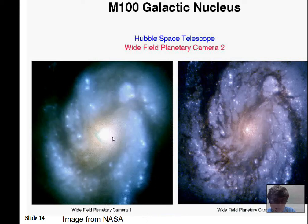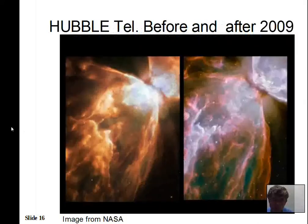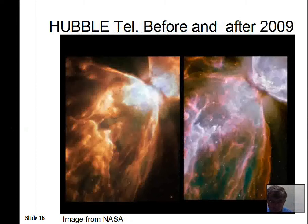Consequently, the Hubble Telescope had to be repaired. Since it's in a low Earth orbit reachable by astronauts, there have been five servicing missions to upgrade equipment and install corrective optics — essentially glasses to fix its vision. These have been extremely successful. The last mission in 2009 greatly improved optics quality and electronic detectors. There are no future plans to update Hubble, but it should provide good images for a few more years, hopefully until the James Webb Telescope begins operation.